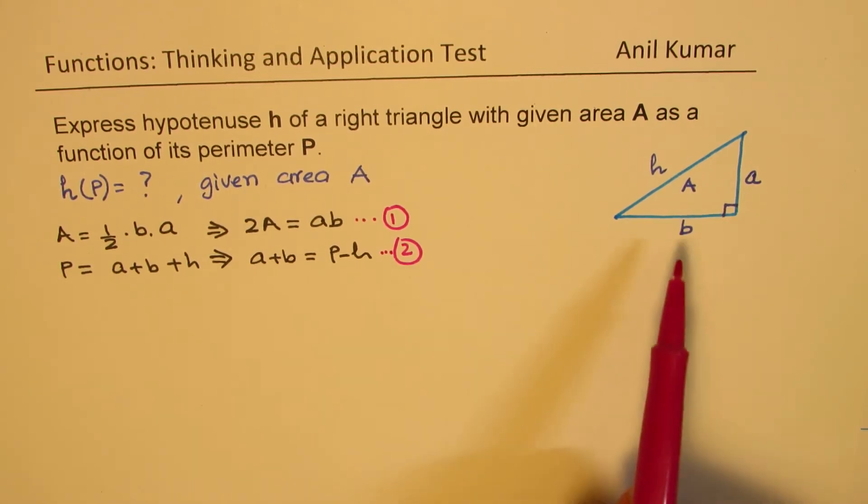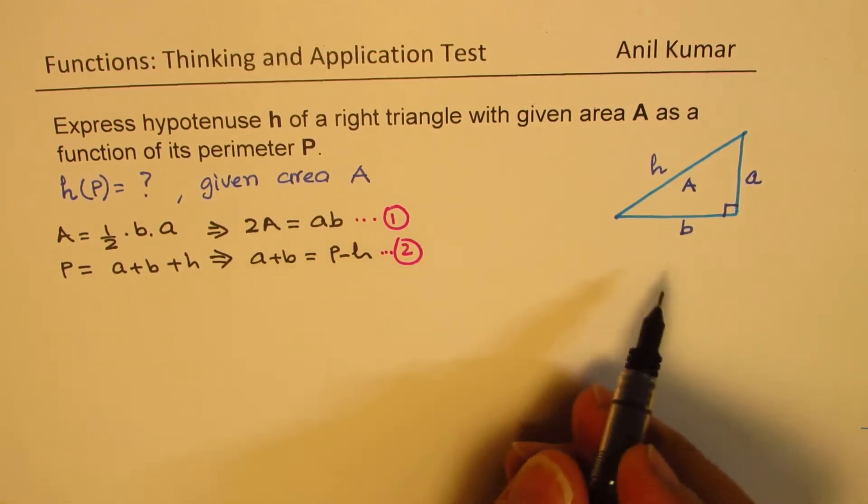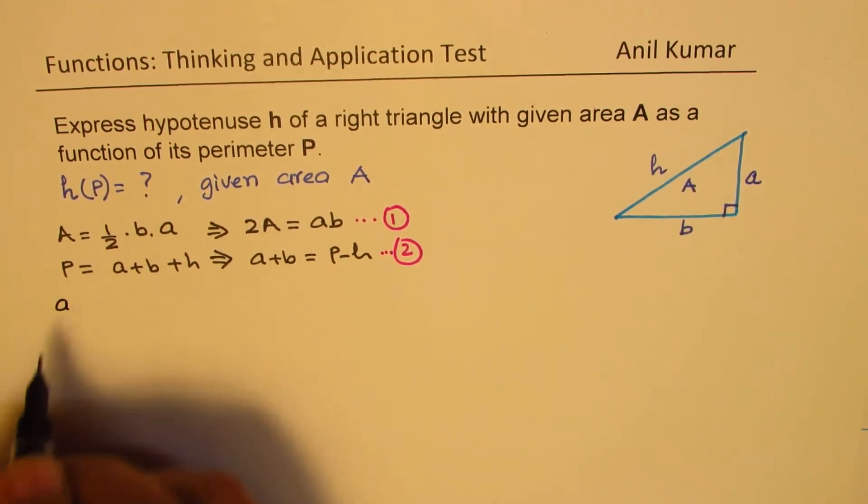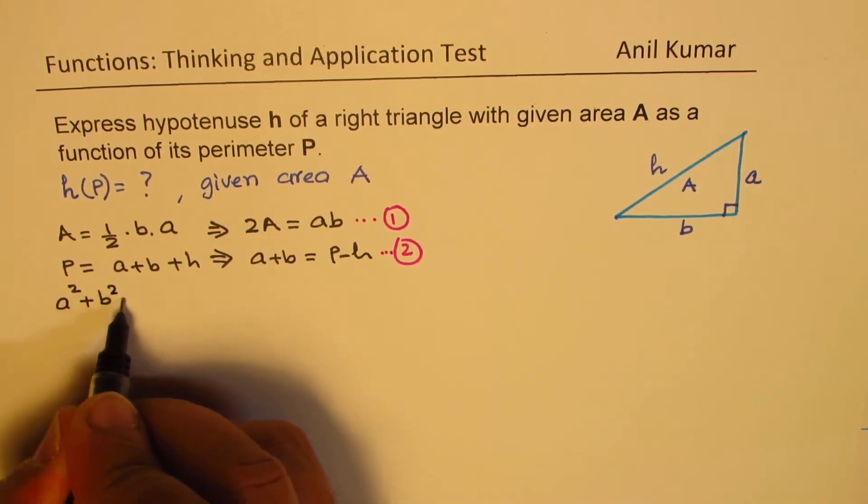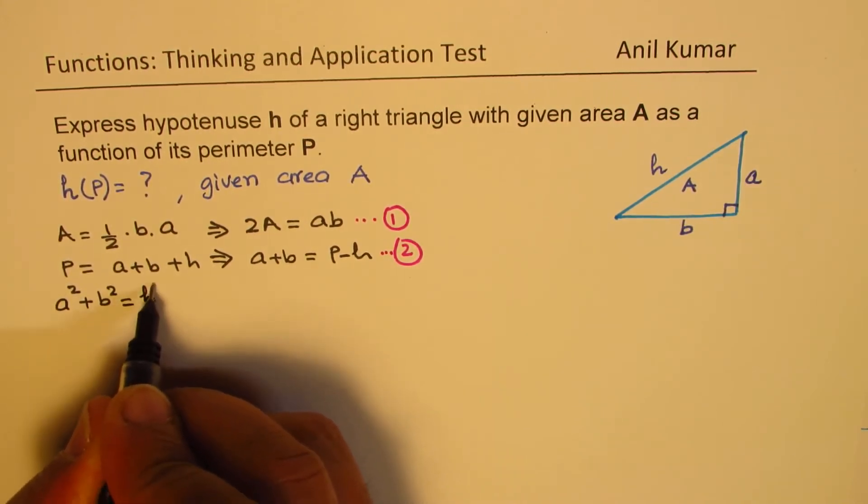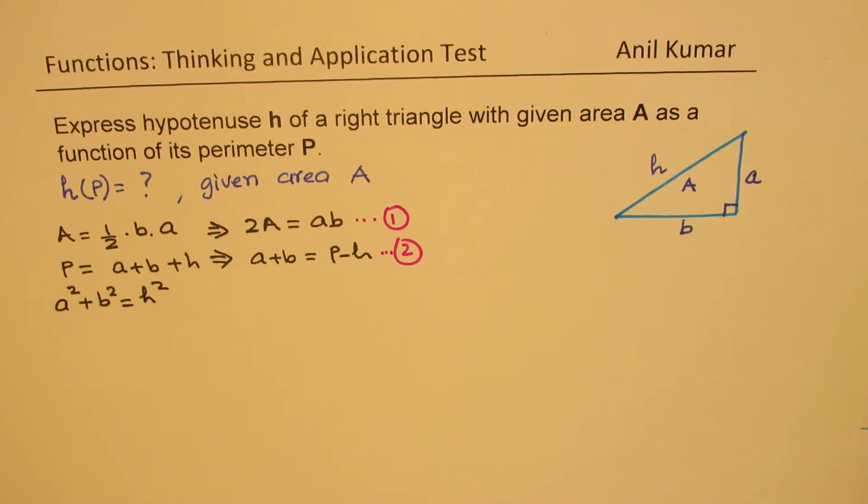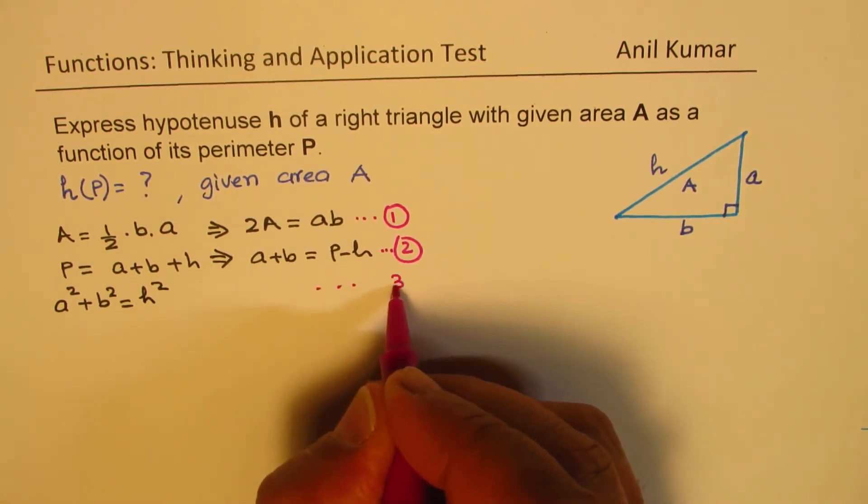Now, we also know Pythagorean theorem, so that should also be taken into account. So we have a squared plus b squared equals h squared. So let's call this as our equation number 3.